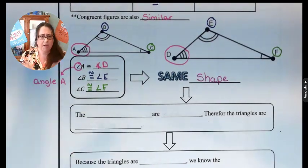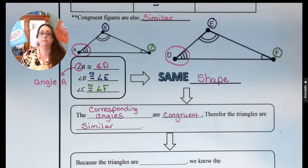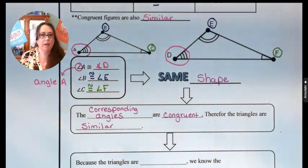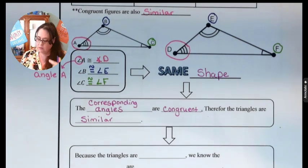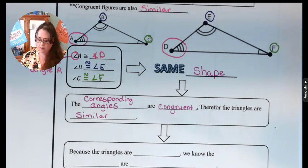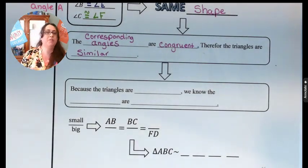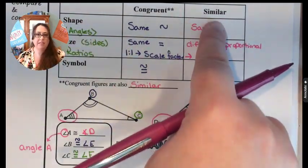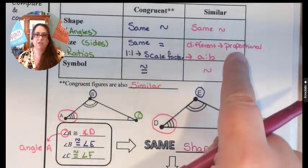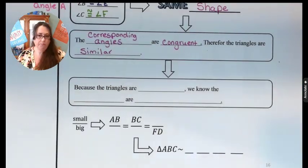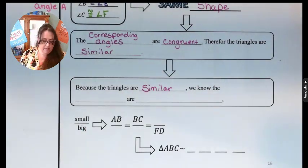So to put what we just talked about into words: the corresponding angles are congruent, therefore the triangles are similar. Corresponding means they're in the same place — if you need to define that, pause and write it down. Since we know the corresponding angles are congruent, therefore the triangles are similar. We can now make another inference: because they're similar, the sides are proportional. This table is going to help us explore that.